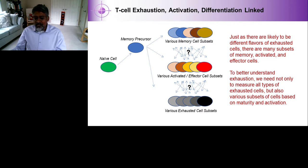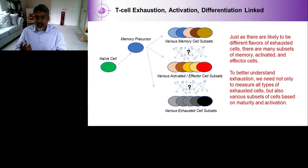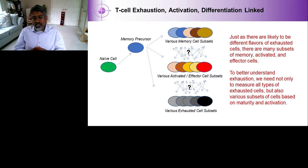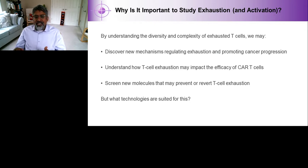Just as there are lots of different flavors of exhausted cells, there are many different subsets of memory, activated, and effector cells. To better understand exhaustion, we need to understand how cells transition between these different subsets — there are tons of memory subsets that can give rise to certain but not other effector cell subsets, some of which may give rise to exhausted cells. So to really understand the process of exhaustion, we need to understand various cell subsets based on activation, differentiation, and maturity.